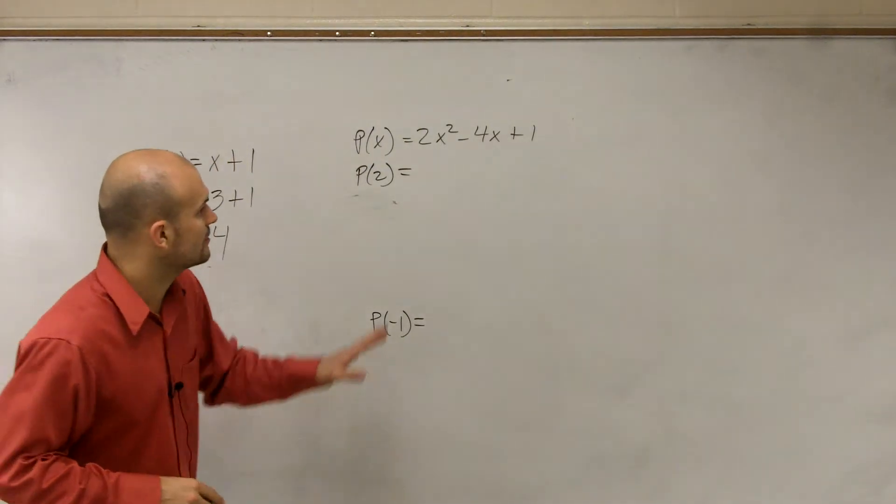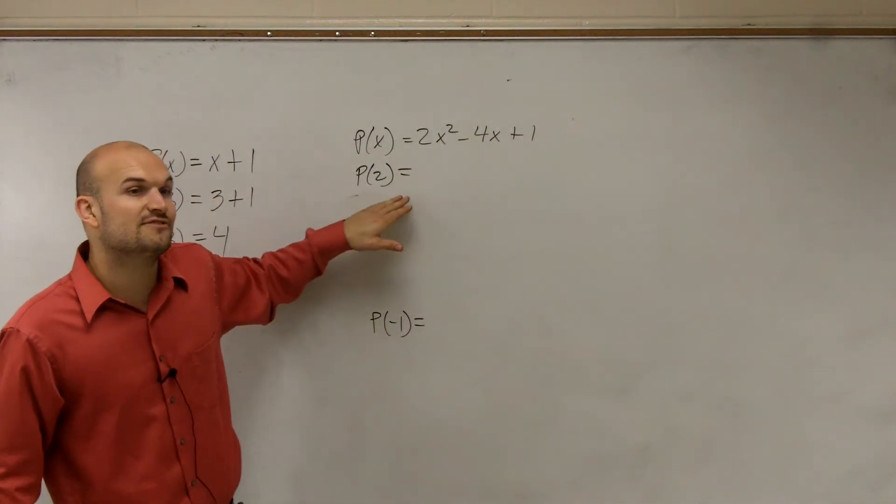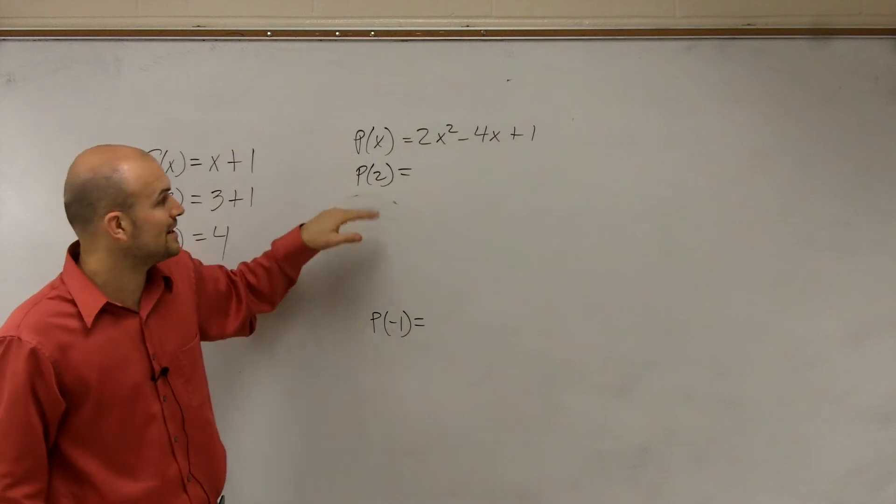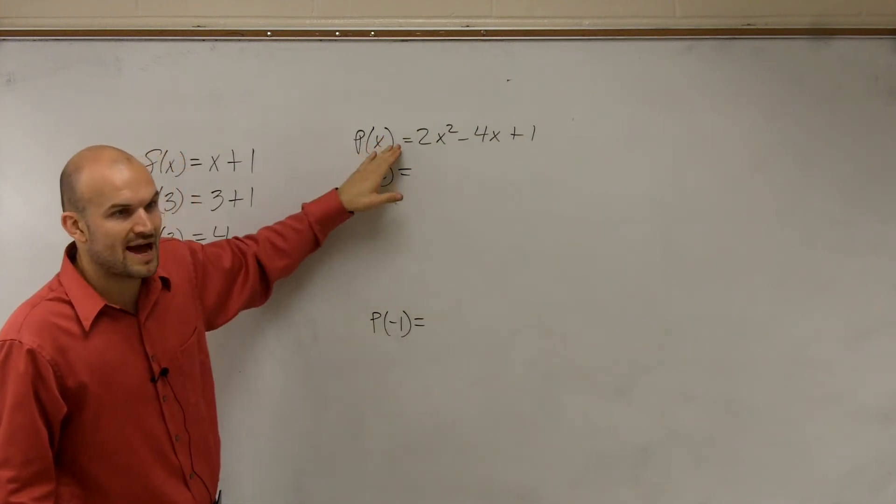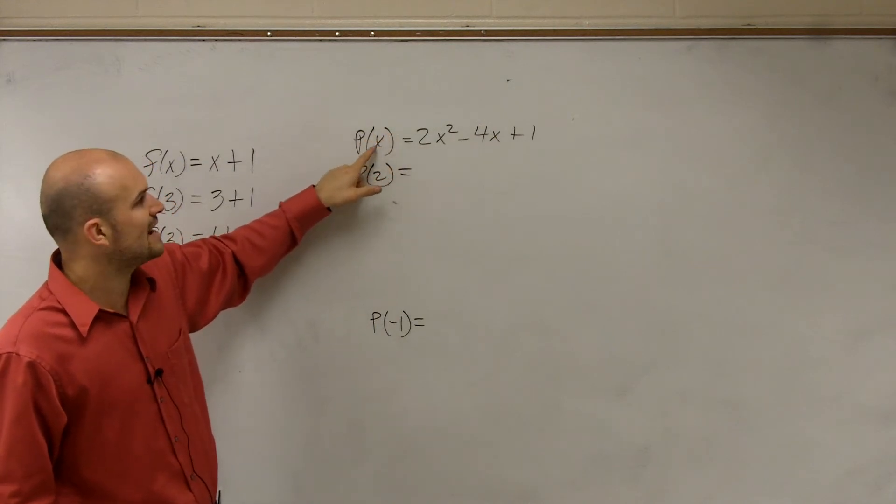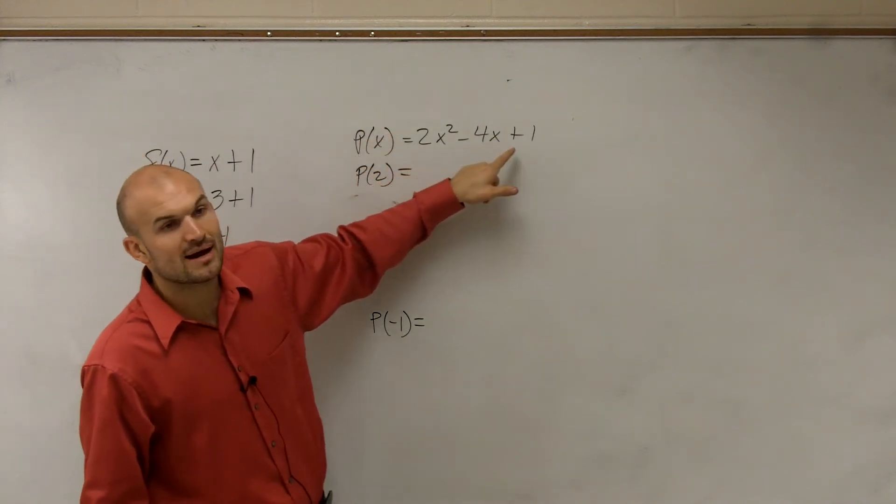So now, let's go and take a look at this problem. If I want to find the value now, the new name of my function is P. So the value of my function, P of x, when evaluated at x, is 2x squared minus 4x plus 1.